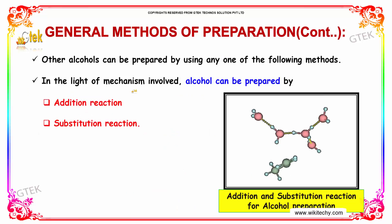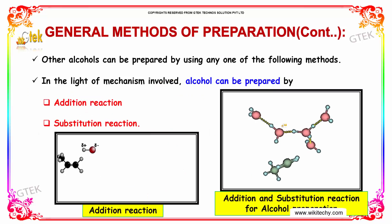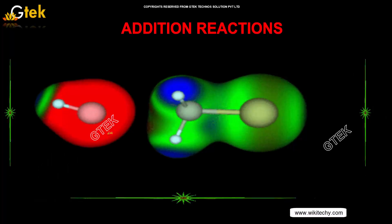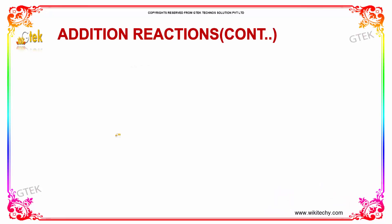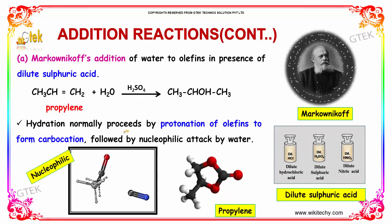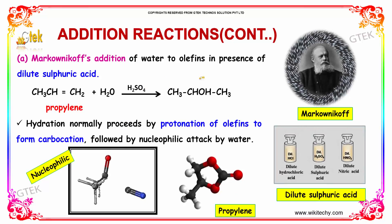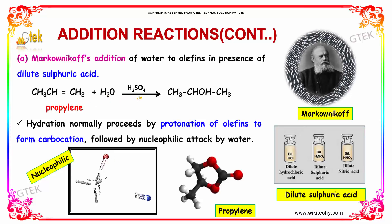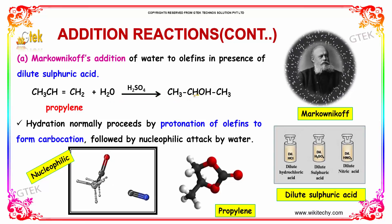Other alcohols can be prepared by the following methods. In light of the mechanism involved, alcohol can be prepared by addition reactions or substitution reactions. The first is addition reactions: Markovnikov's addition of water to olefins in the presence of dilute sulfuric acid. For example, propylene reacts with water in the presence of H2SO4 to form CH3CHOHCH3, which is an alcohol.